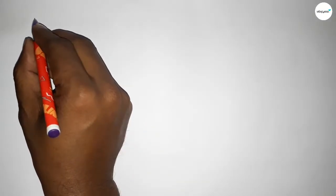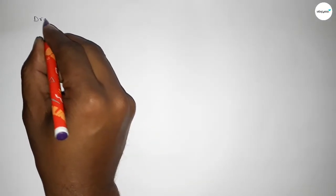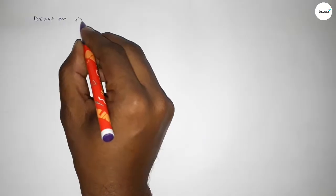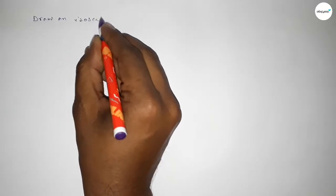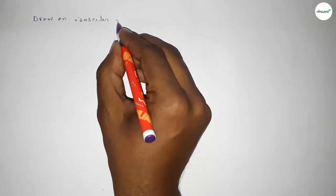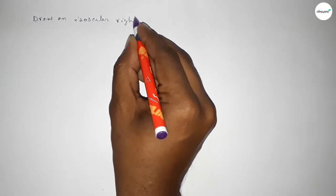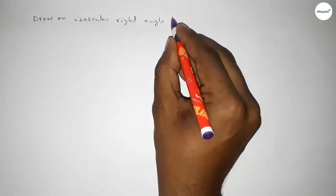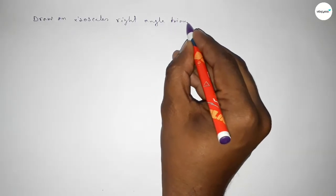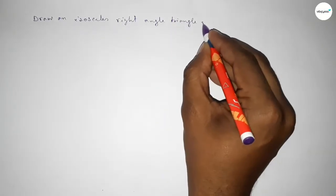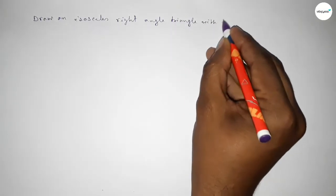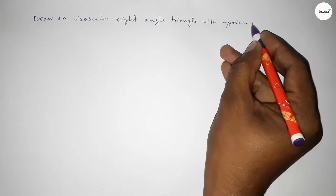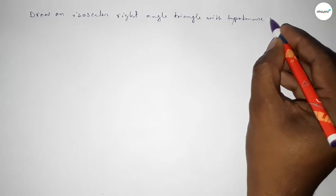Hi everyone, welcome to SSR Classes. Today in this video we have to draw an isosceles right angle triangle with only the given hypotenuse equal to 9 centimeters. So let's start the video.